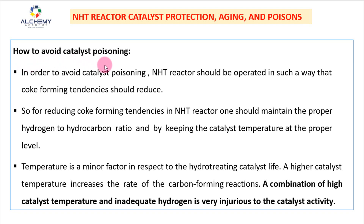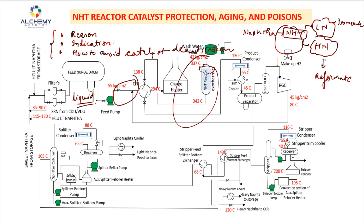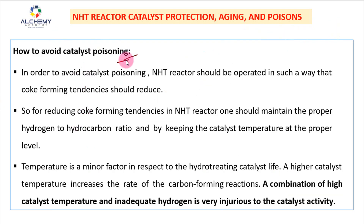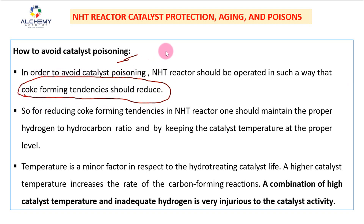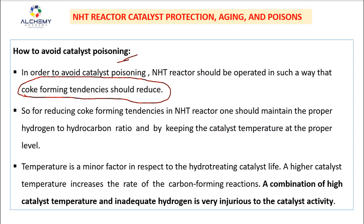Now, how to avoid catalyst poisoning. To avoid catalyst poisoning, the NHT reactor should be operated in such a way that coke-forming tendency is reduced. You have to set the NHT reactor operating conditions — reactor temperature and pressure — to reduce coke-forming tendency. You should also monitor the quality of the liquid charge feed being processed. For reducing coke-forming tendencies, one should maintain a proper hydrogen-to-hydrocarbon ratio and keep the catalyst temperature at a proper level.